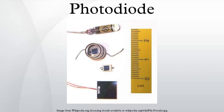Dark current is the current through the photodiode in the absence of light when operated in photoconductive mode. The dark current includes photocurrent generated by background radiation and the saturation current of the semiconductor junction.